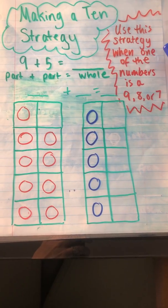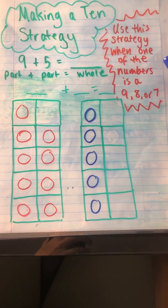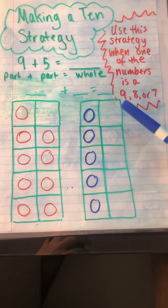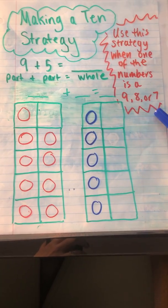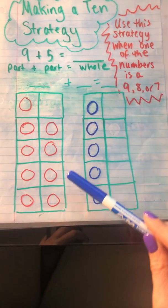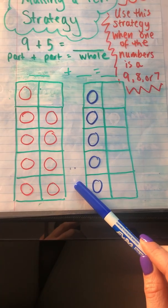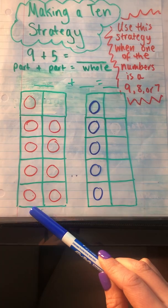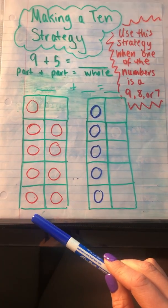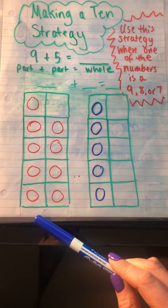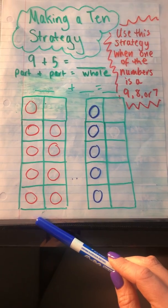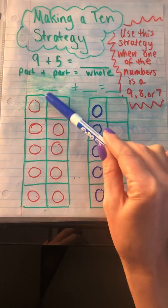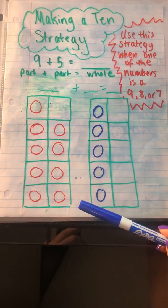Let's look at this example here: 9 plus 5. We have part plus another part equals one whole. You can use this strategy when one of the numbers in your number sentence for addition is a 9, 8, or 7. You can draw a 10 frame like I did here or you can print one out from online and use counters if you have them at home. I'm going to draw pictures because I don't have any counters. So either way works just fine.